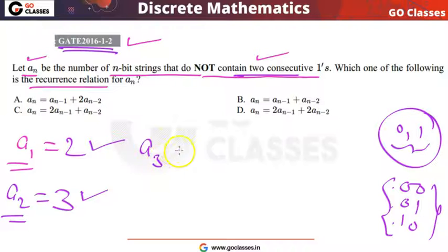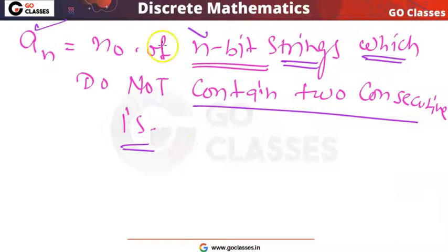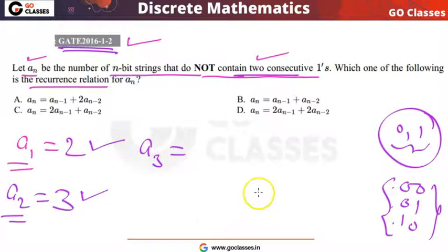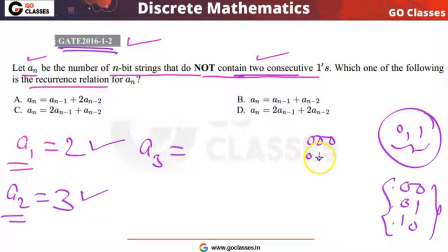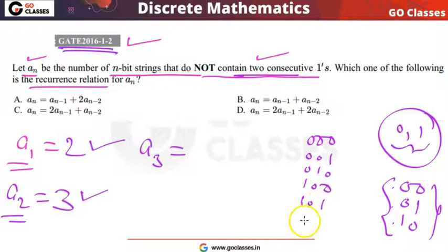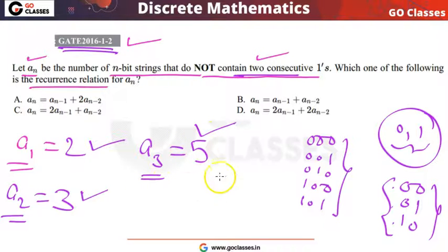What is A3? A3 means three-length bit strings. How many three-length bit strings do not contain consecutive ones? You can find these — there are a total of five three-length bit strings which do not contain consecutive ones. So A3 = 5. We now have A1, A2, and A3.